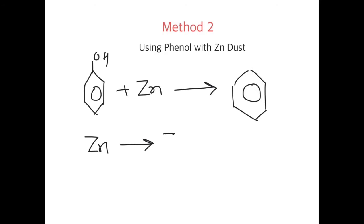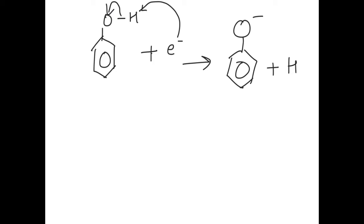So what happens here is first zinc ionizes and gives you Zn2+ plus two electrons. Now why do I say that? By looking at the side product, that is ZnO. Here oxidation state of zinc is +2. Now remember it will be important to count these electrons because these electrons are what will carry out this reaction. How? Let us see. First, one of the electrons attacks phenol, actually it attacks the hydrogen attached with the oxygen.